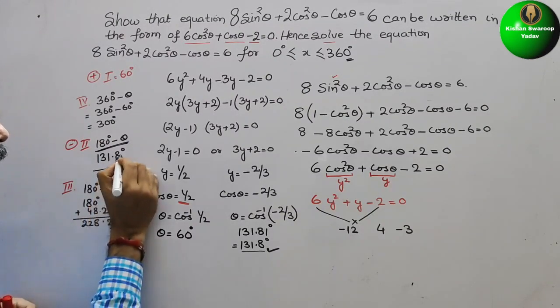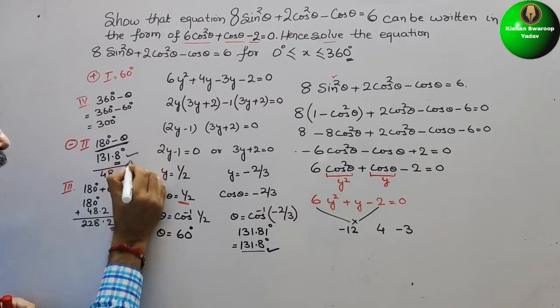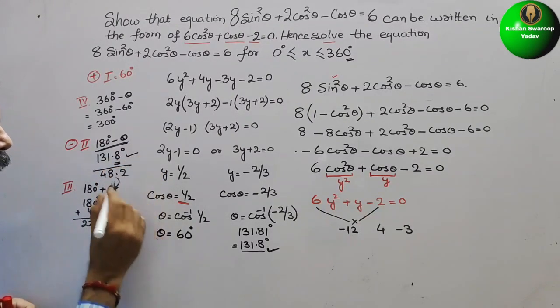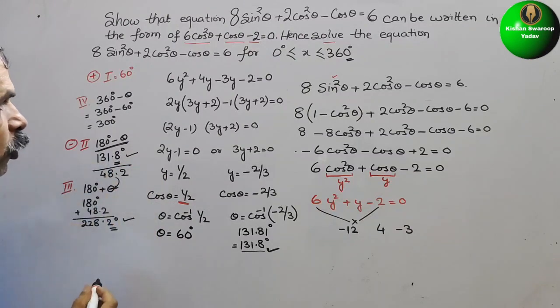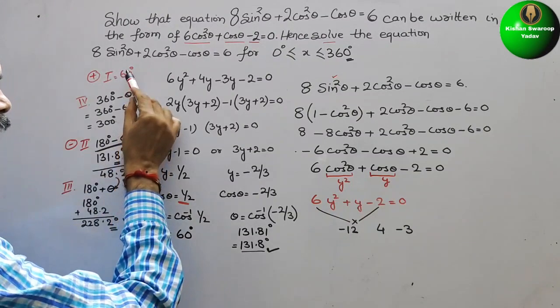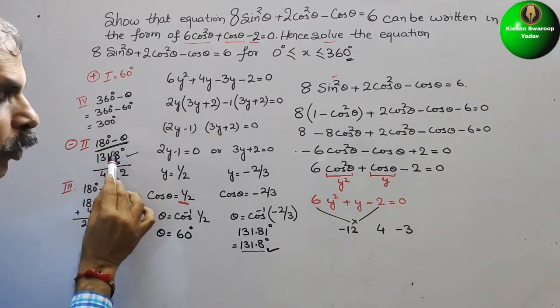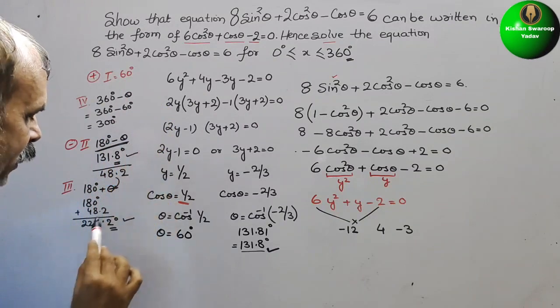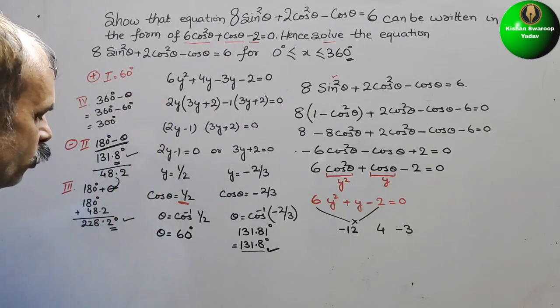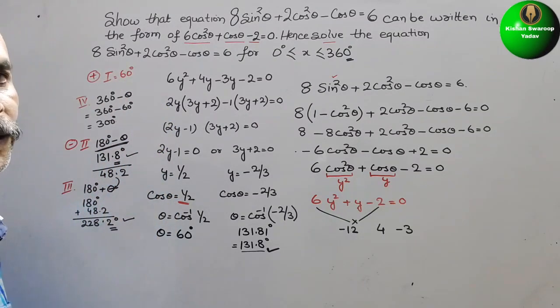So the four solutions are: θ = 60°, 300°, 131.8°, and 228.2°.